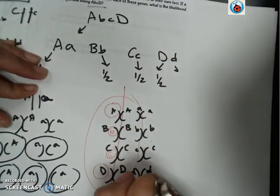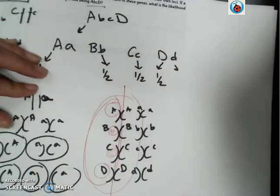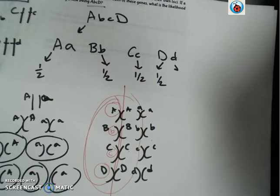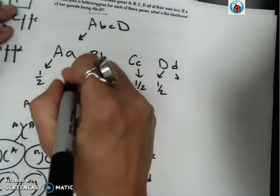And then because when they divide again, what is the likelihood that all of these will end up in one gamete? So now we are going to multiply these.